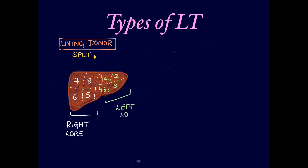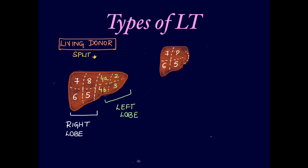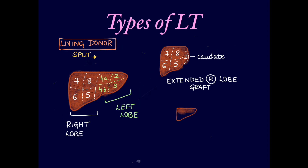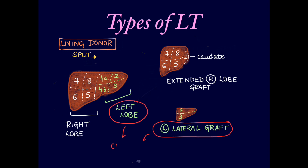In left lobe transplantation, segments 4a, 4b, 2, and 3 are used. If the caudate lobe is harvested along with right lobe segments, it is called extended right lobe transplantation. If segments 2 and 3 alone are used, it is called a left lateral graft. Left lobe and left lateral graft are usually used in children due to their small body size.